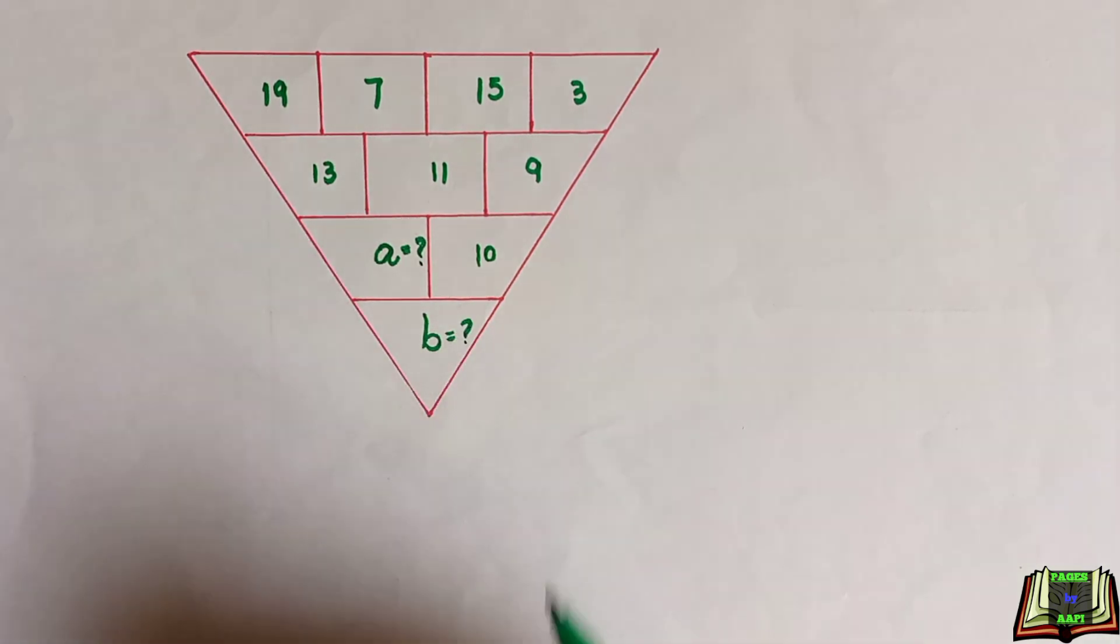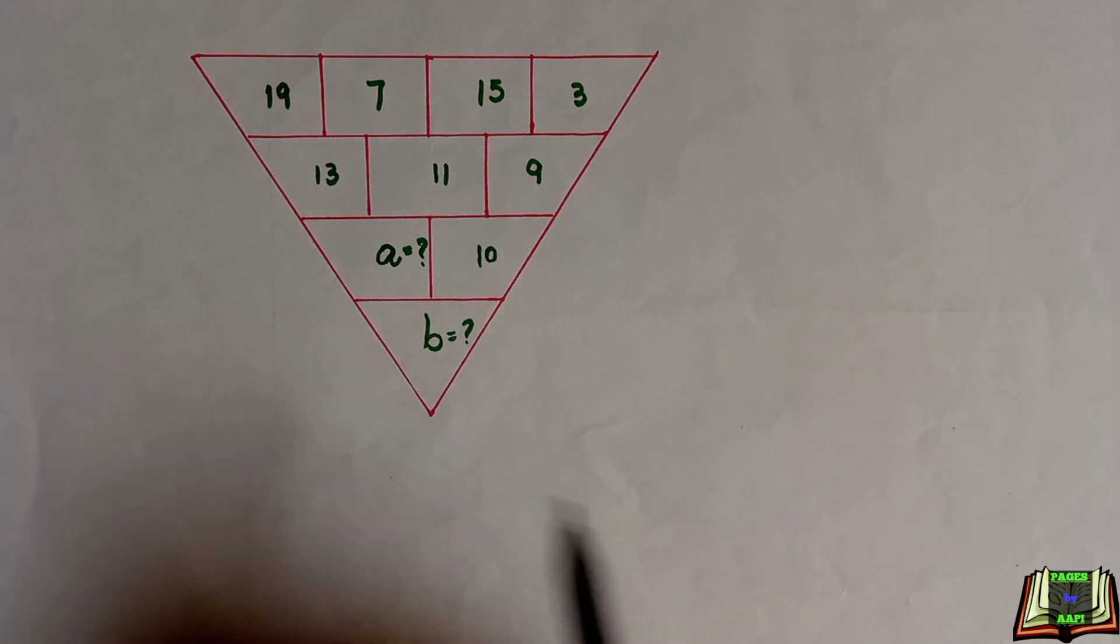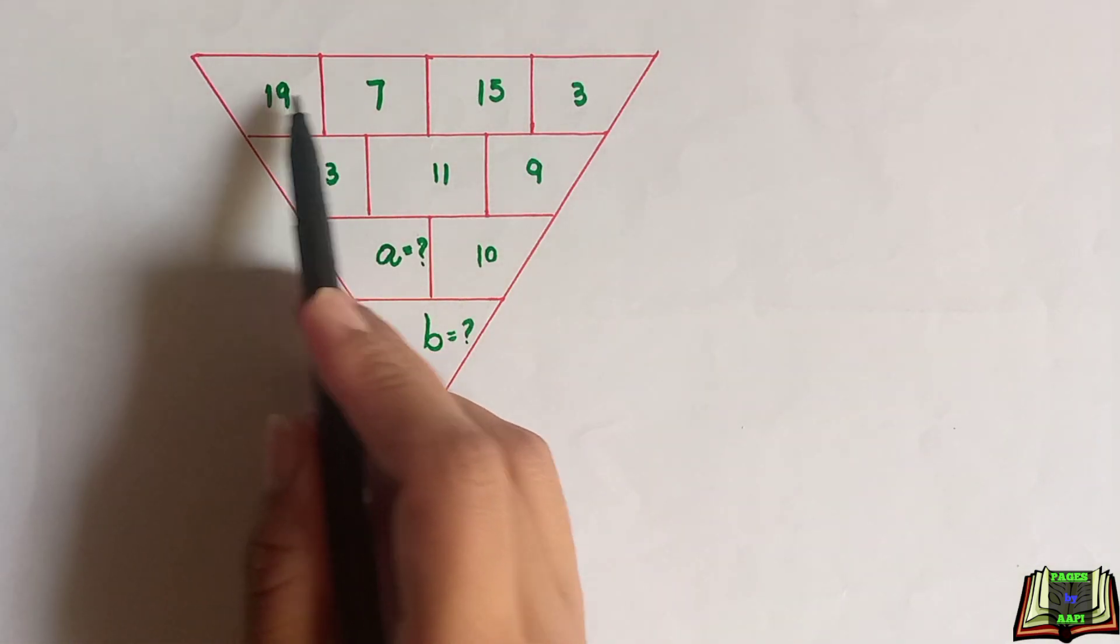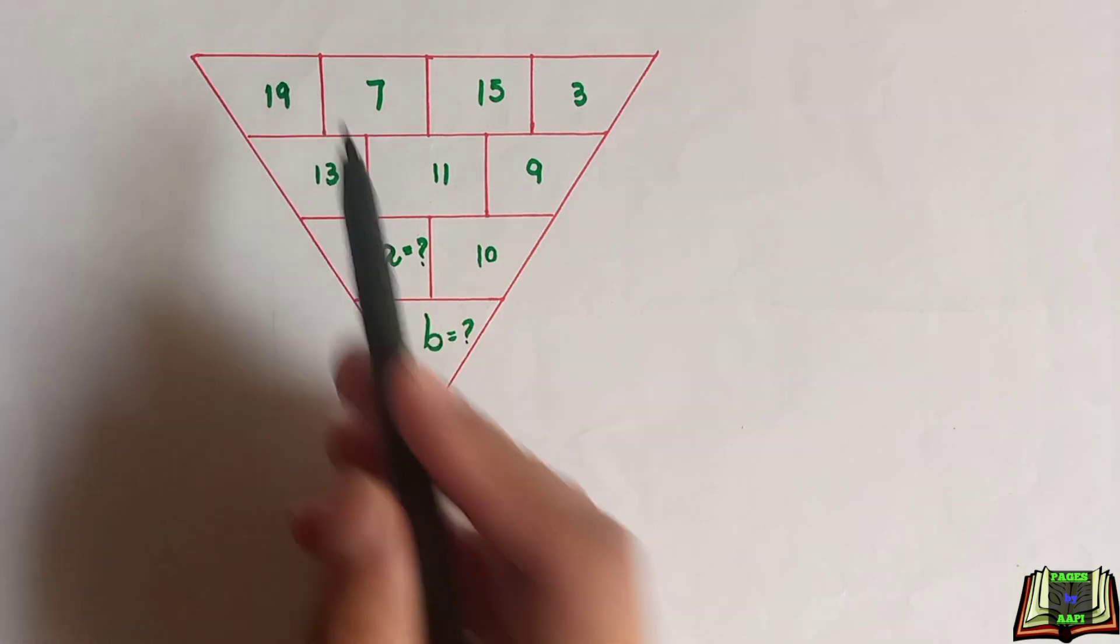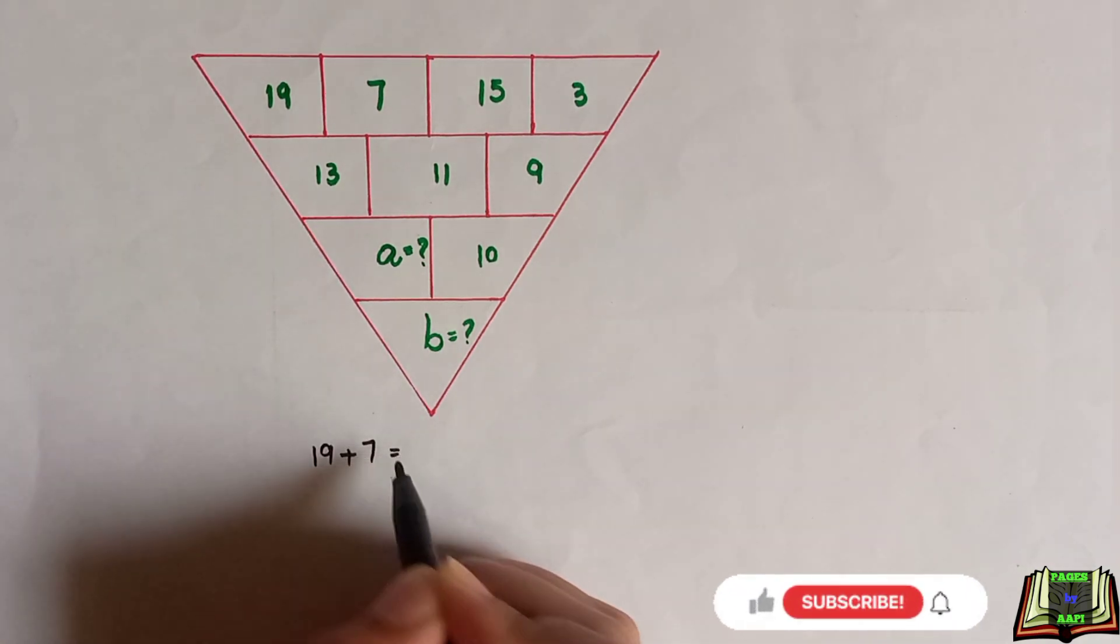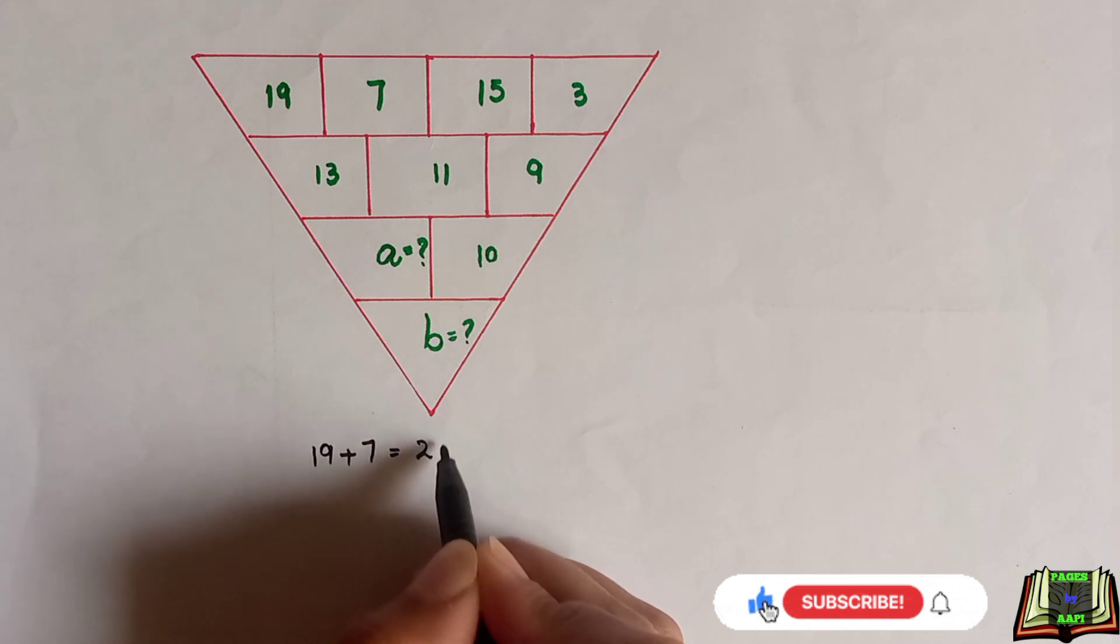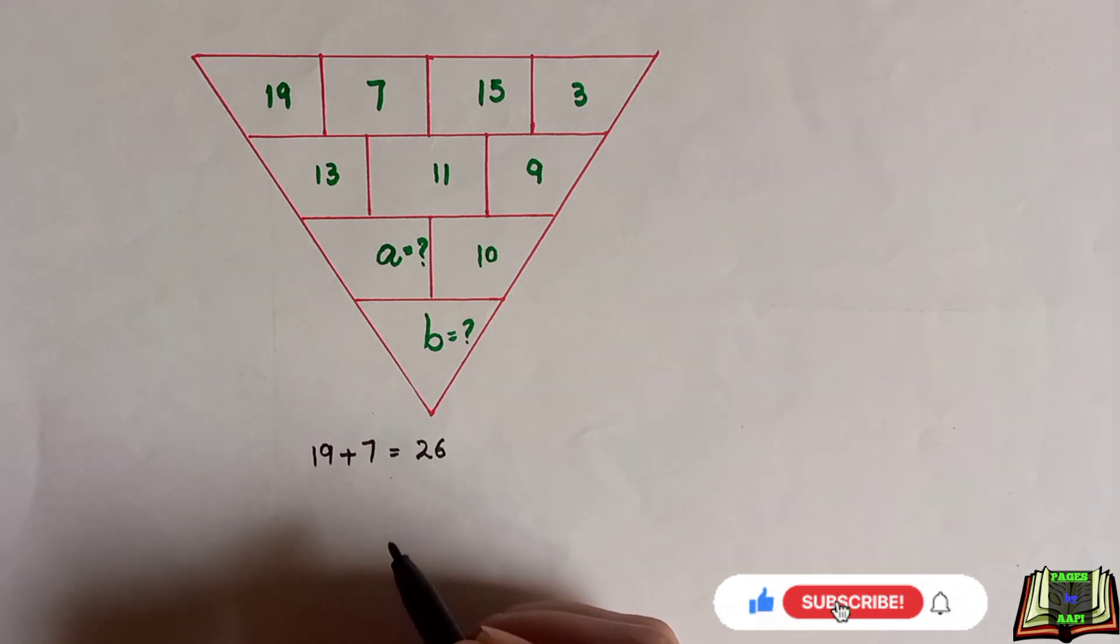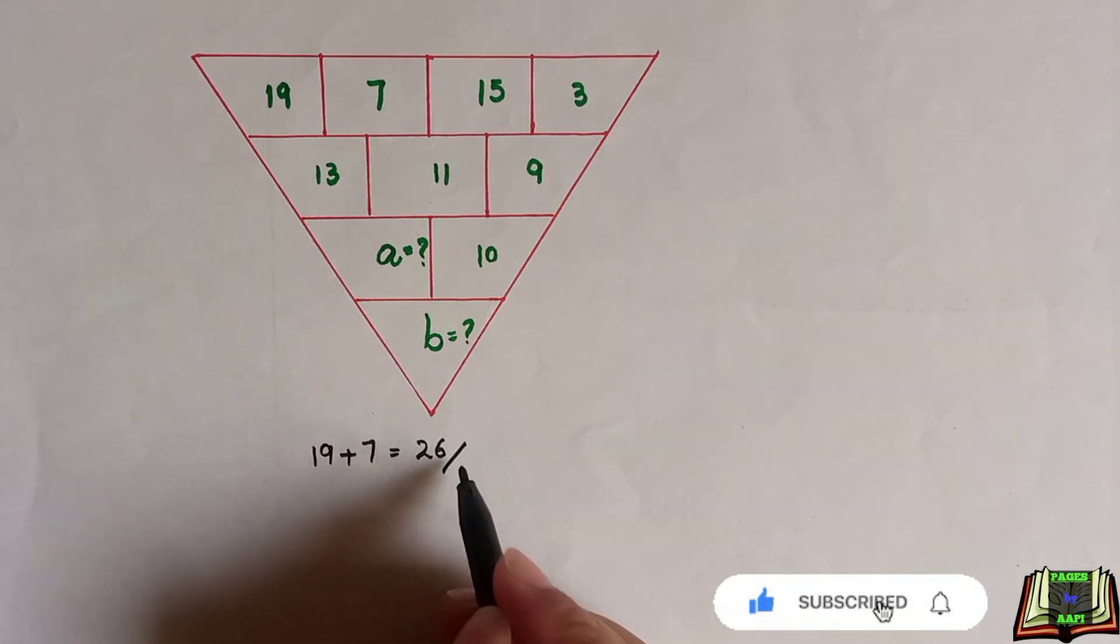To find them out, first we will add these two numbers: 19 and 7. 19 plus 7 equals 26. After that, we will divide this sum by 2, so 26 divided by 2 is 13.